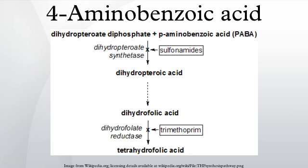PABA is an intermediate in the synthesis of folate by bacteria, plants, and fungi. Many bacteria, including those found in the human intestinal tract such as E. coli, generate PABA from chorismate by the combined action of the enzymes 4-amino-4-deoxychorismate synthase and 4-amino-4-deoxychorismate lyase. Plants produce PABA in their chloroplasts and store it as a glucose ester in their tissues.